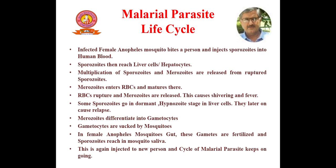Coming to the life cycle of the malarial parasite. The infected female Anopheles mosquito bites a person and injects sporozoites of the malarial parasite into the human blood. These sporozoites then reach liver cells or hepatocytes, where multiplication takes place and merozoites are released from ruptured sporozoites. Merozoites enter RBCs and mature there. RBCs rupture and merozoites are released, causing shivering and fever. Some sporozoites go into a dormant phase — the hypnozoite stage — in liver cells.